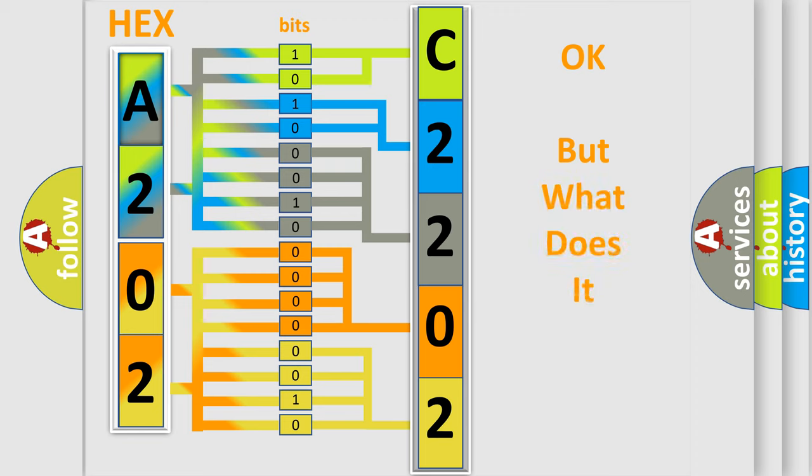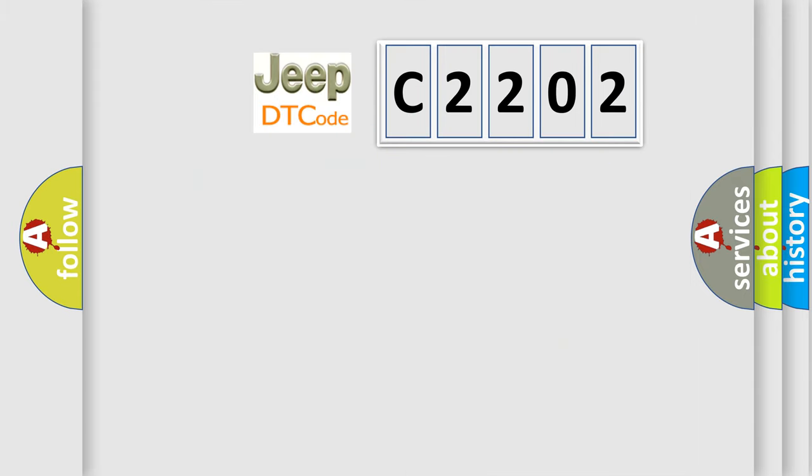The number itself does not make sense to us if we cannot assign information about it to what it actually expresses. So, what does the diagnostic trouble code C2202 interpret specifically for car manufacturers?